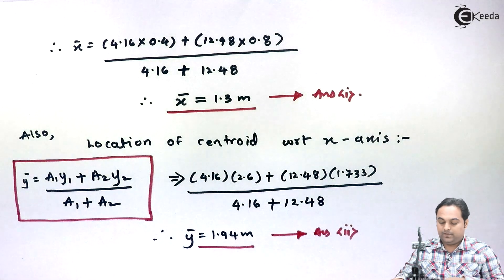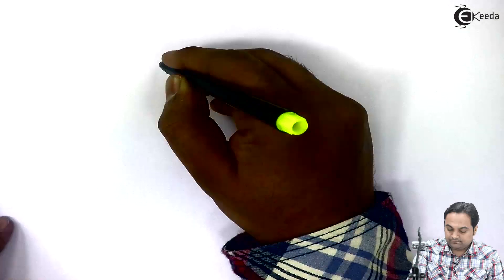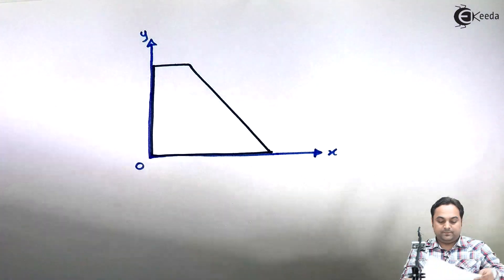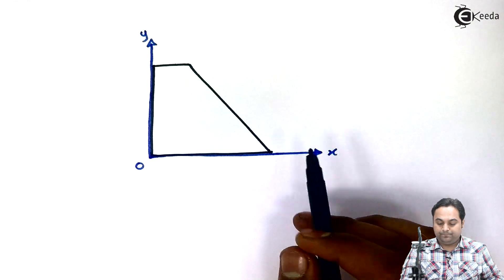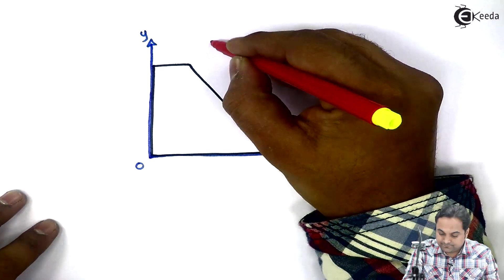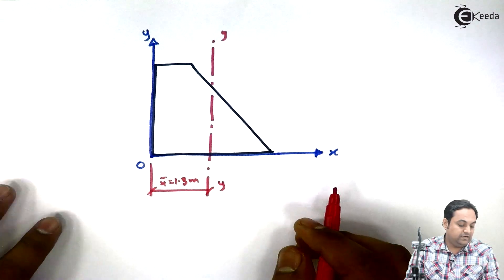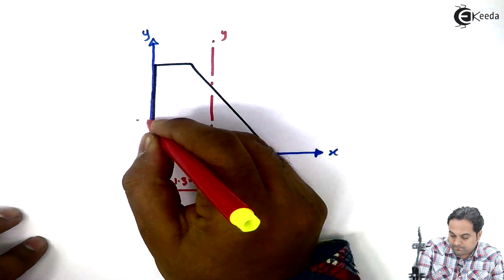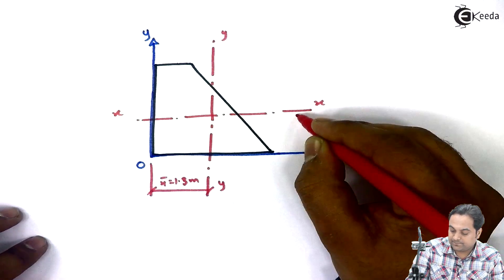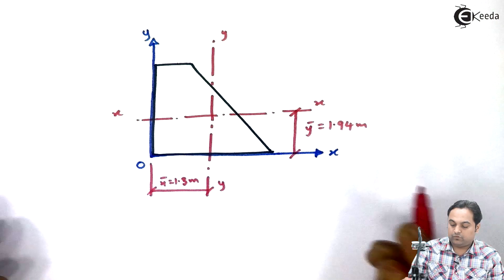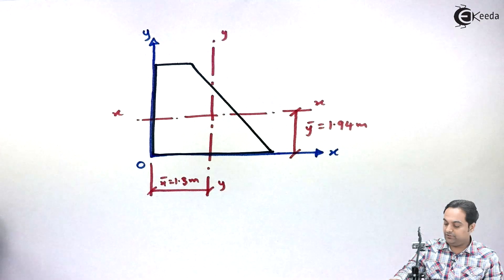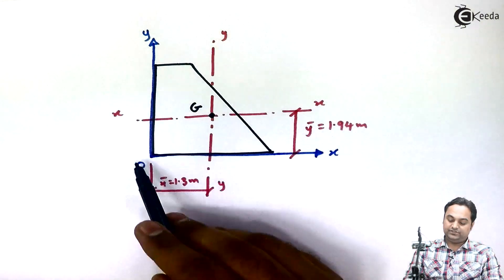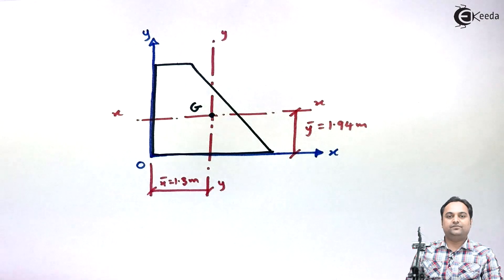Now I will locate this centroid on the retaining wall. x̄ = 1.3 meters is the location along the y-axis, and ȳ = 1.94 meters is the location along the x-axis. At their intersection, we can mark the centroid. Here is the retaining wall with its centroid located, and with this we complete the problem.